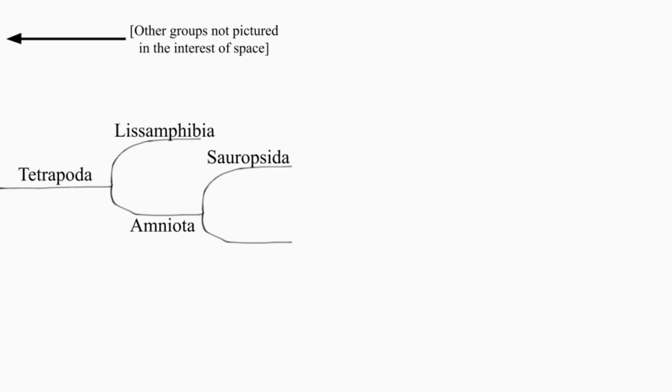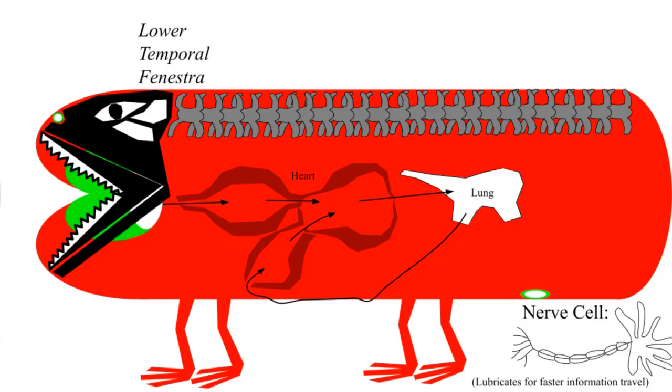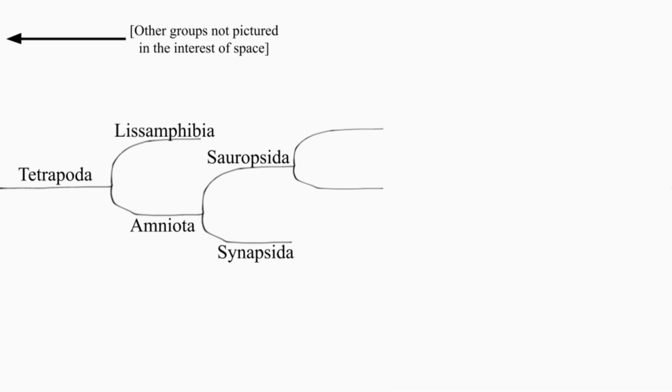Amniota splits into the lizard faces and the together circles. Sauropsids have an extra pair of holes in their skull under the previous, as well as a bump on the bottom of the jaw. They divide into- actually it's controversial what they divide into, but I'll just give you what I was taught...